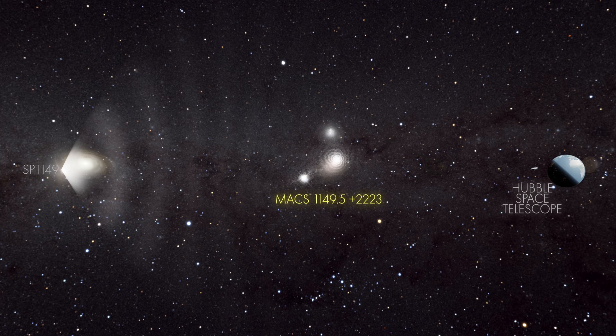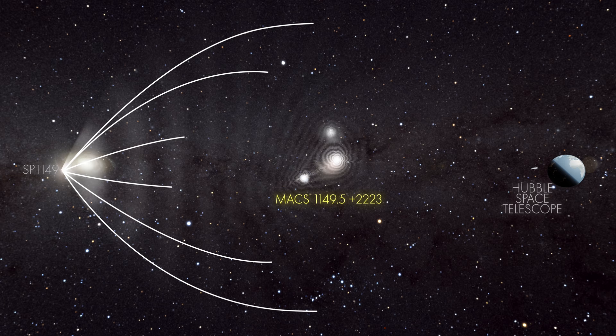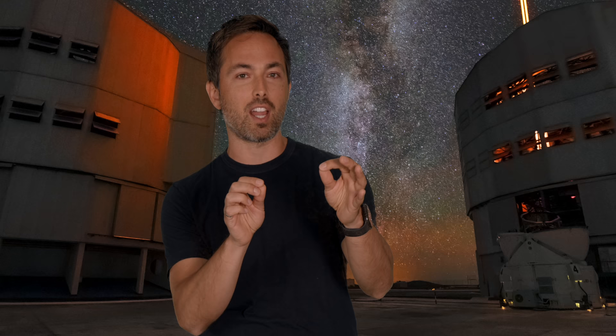Now one reason for the time delay between the supernova images is because the four paths the light took were different lengths. So it just took the light longer to travel further. But there is another reason.